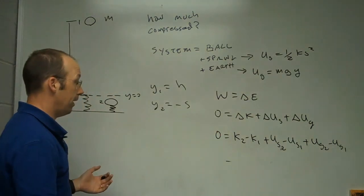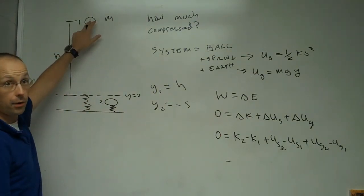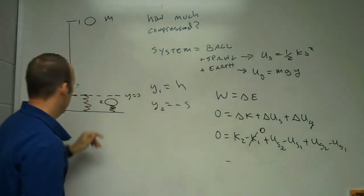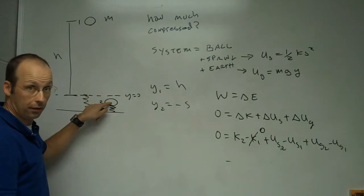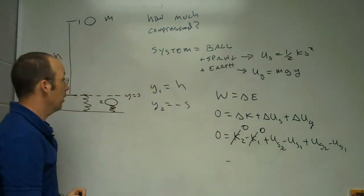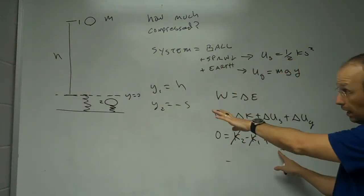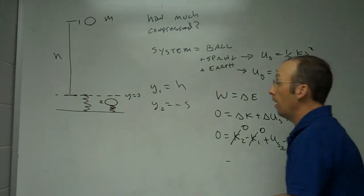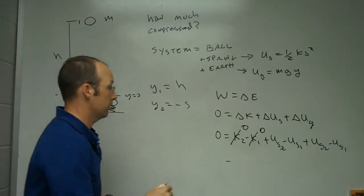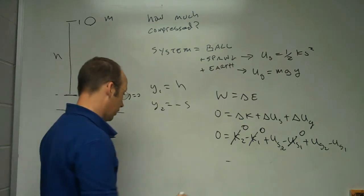Now I can start putting in values, because I know some things are zero. The kinetic energy at the start is zero — released from rest. The kinetic energy at the lowest point when the spring stops it is also zero — key word: stops. And the spring potential energy at position one is zero because the spring is not compressed or stretched at that point.